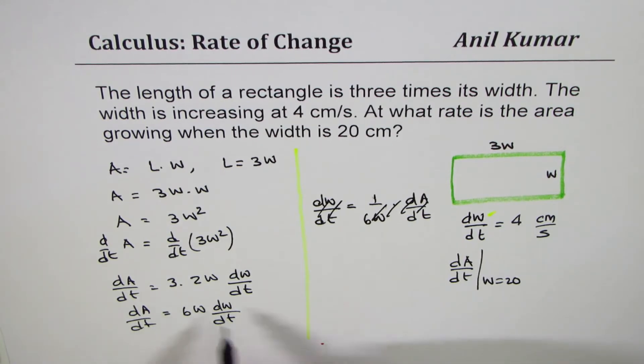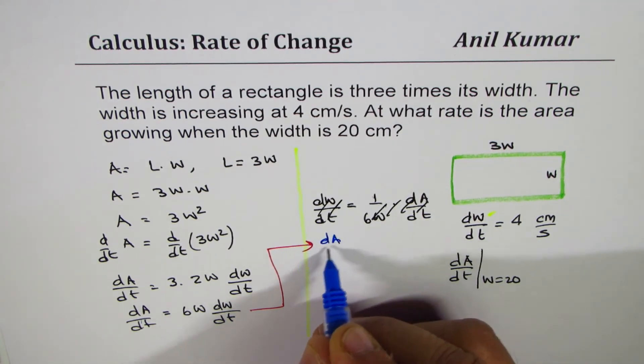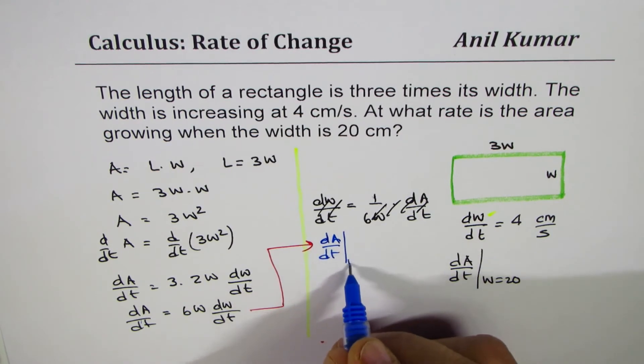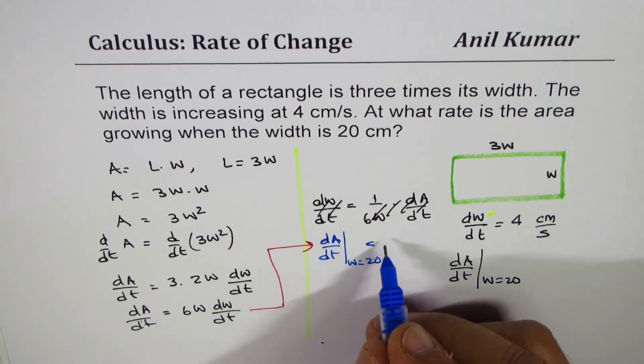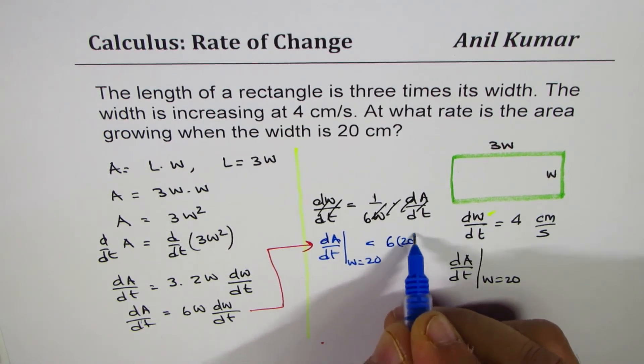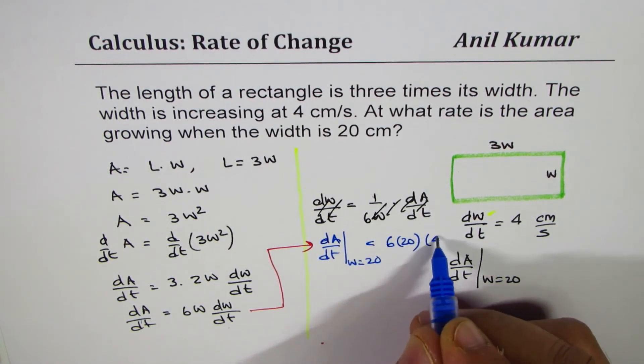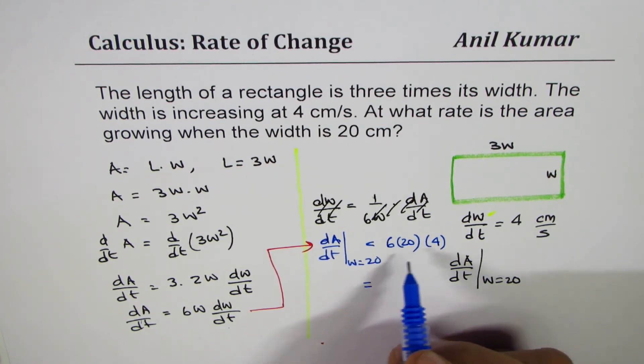Now we can directly use this formula. What is dA/dt when W equals 20? Let's substitute the values: we get 6 times 20 times dW/dt, which is 4, and that gives us 480.